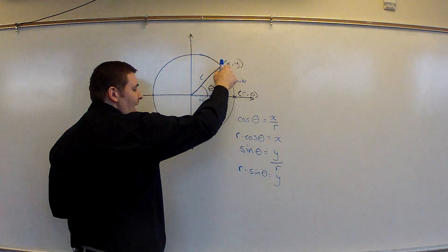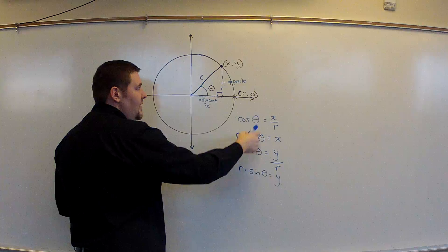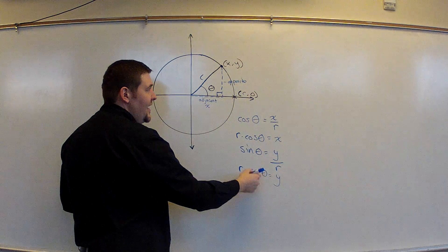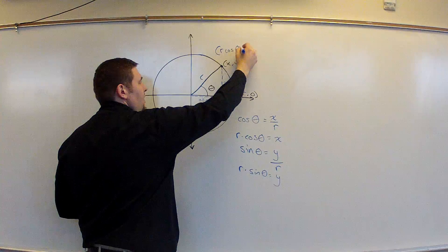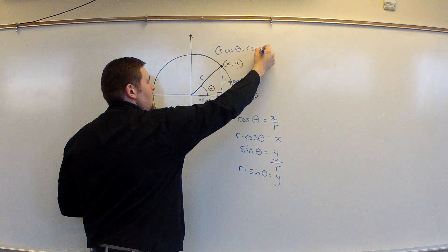I'm going to write this as a coordinate pair. x is now radius cosine theta, y is now radius times sine of theta. This can be written as r cosine theta, r sine theta.